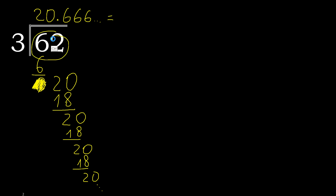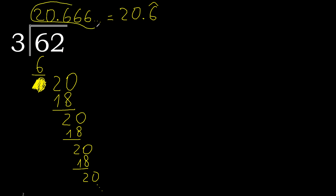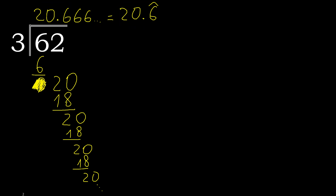62 divided by 3 equals — here — repeat 6. Therefore like this. 62 divided by 3 is this, or like this. 63 divided by 3.